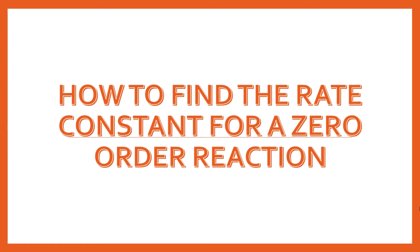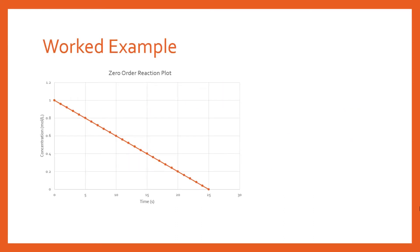In this video I'm going to run through a simple worked example of how to find the rate constant for a zero order reaction. I've plotted here a zero order reaction, and you can tell it's zero order because the concentration-time graph gives a perfect straight line.